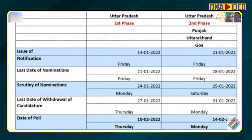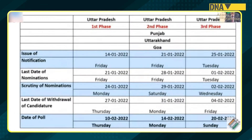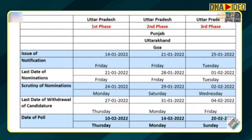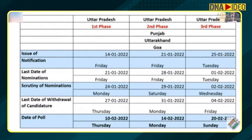Third phase covers only Uttar Pradesh. Issue of notification: 25th January. Last date of nominations: 1st February. Scrutiny of nominations: 2nd February. Last date of withdrawal of candidature: 4th February. Date of poll: 20th February, that is Sunday.